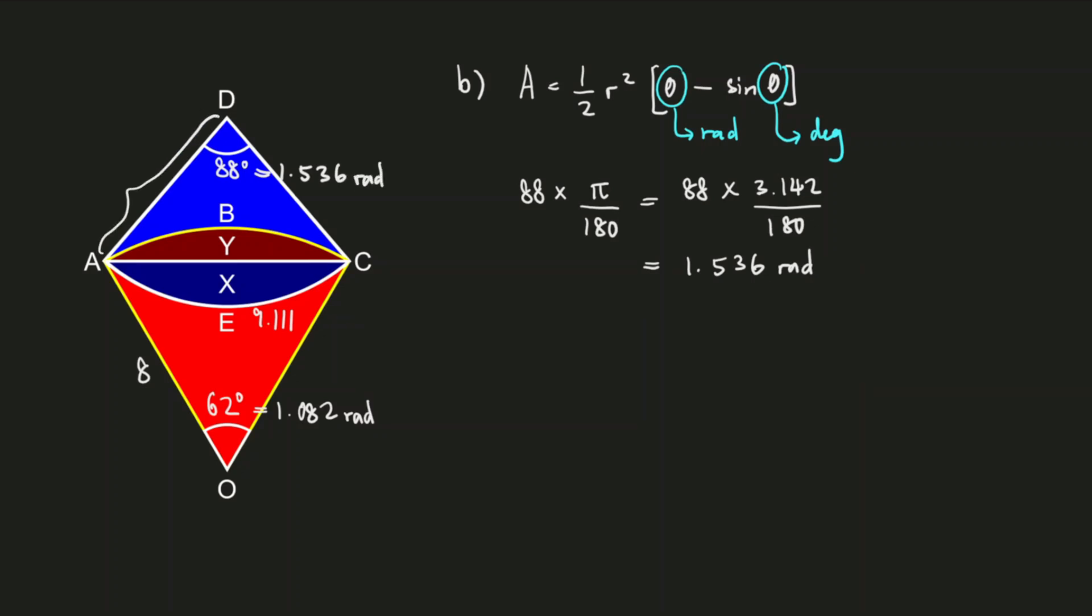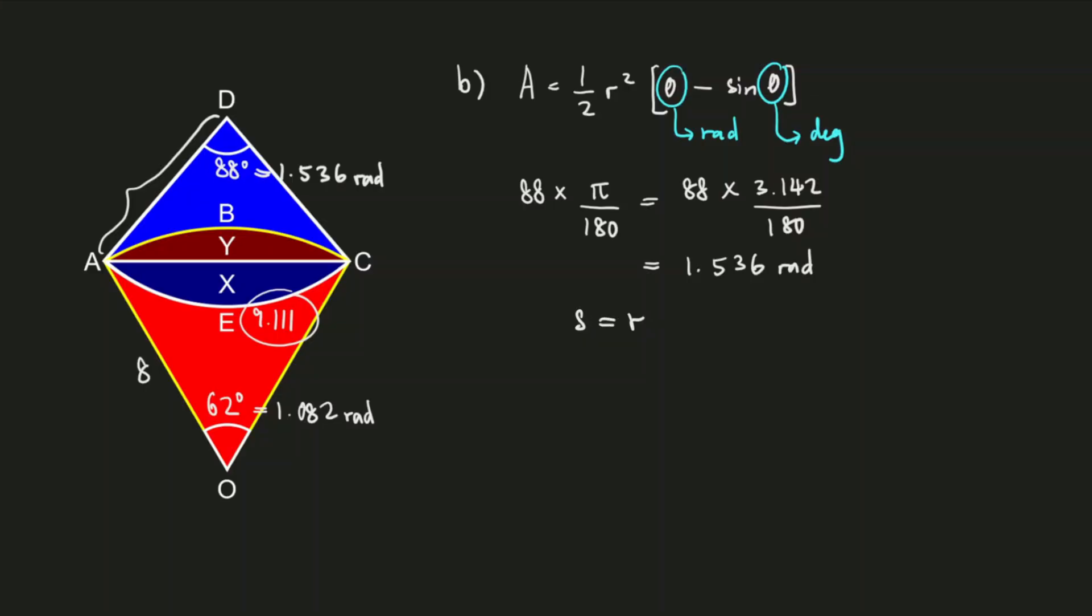Now that we have the angle in radians, we still need to find the radius of sector ADC. We don't have this value - all we have is the arc length. But we can use the arc length to find the radius because the formula for arc length is s = rθ. Making r the subject of the equation, we get r = s/θ, which equals 9.111 ÷ 1.536. And the answer for the radius is 5.932. Let's transfer this to the diagram as well.